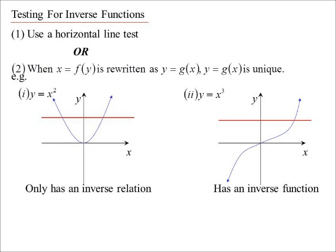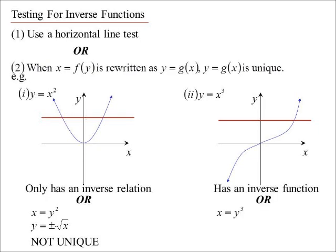The other way of doing it is algebraically: swap the x and y's around and try to make y the subject. If you get a unique answer — only one possibility — then it's an inverse function. For the parabola, swapping gives x equals y squared, and making y the subject gives y equals plus or minus the square root of x — two possibilities, so it's not unique, not an inverse function. For the cubic, x equals y cubed gives y equals the cube root of x, and dealing with real numbers, there's only one answer, so it does have an inverse function.